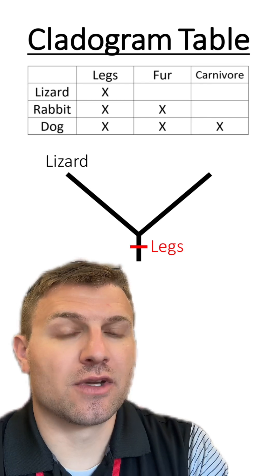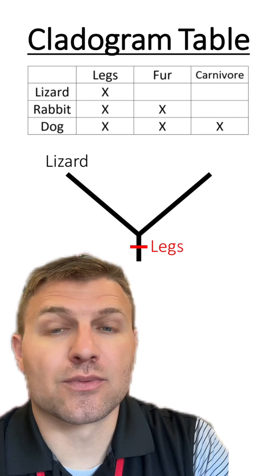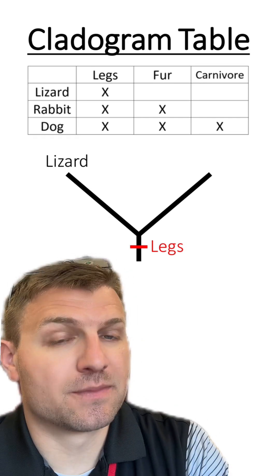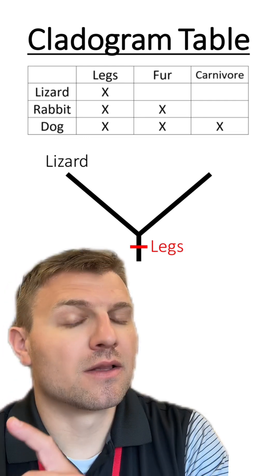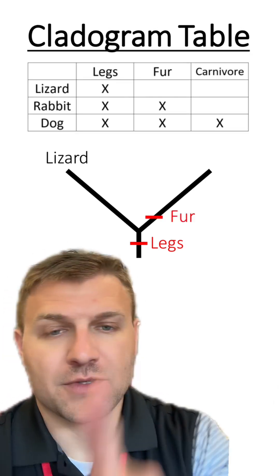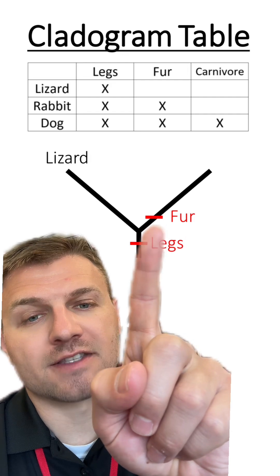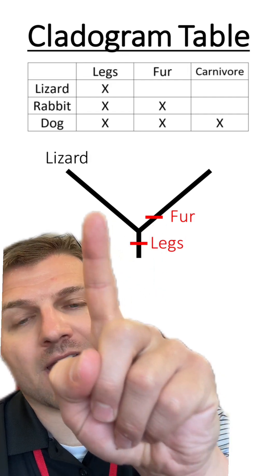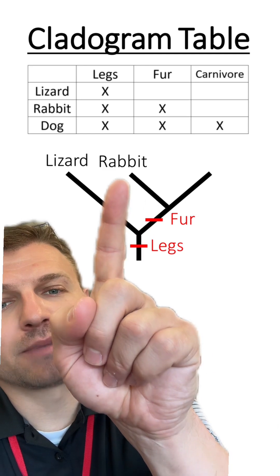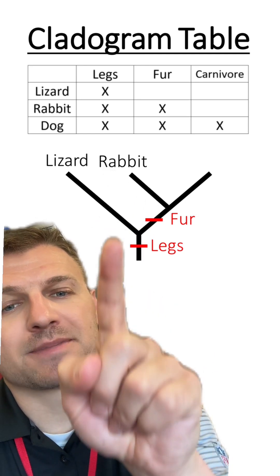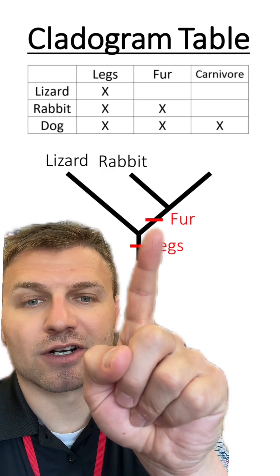If we look at the next adaptation to evolve, fur evolves because rabbits and dogs both have fur. But remember, lizards don't. So fur goes here because it's not on the same lineage path as the lizard. And we're going to place another line here and place rabbit at the top since rabbits have legs and fur.